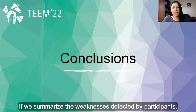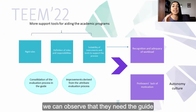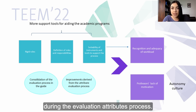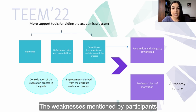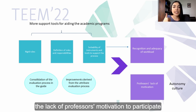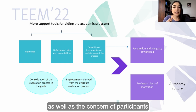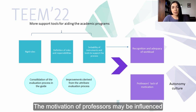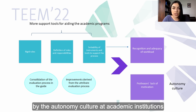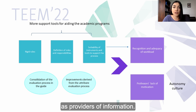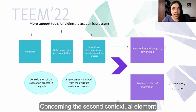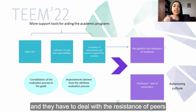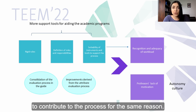Summarizing the weaknesses detected by participants, we can observe that they need the guide to have more support tools for aiding the academic programs during the evaluation attributes process. The weaknesses are intersected by two contextual elements: the lack of professors' motivation to participate in the evaluation of attributes, as well as the concern of participants on the inadequate workload assignments. The motivation of professors may be influenced by the autonomy culture at academic institutions, as well as the traditional role of instructors as providers of information. Concerning the second contextual element, the leader of accreditation commissions usually carry out tasks that are not recognized in their salaries and they have to deal with the resistance of peers to contribute to the process for the same reason.